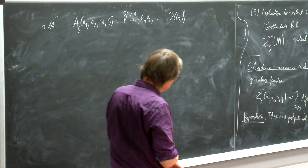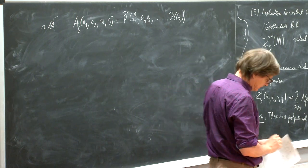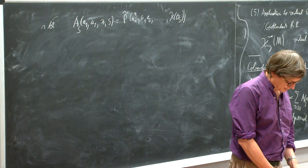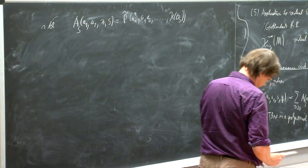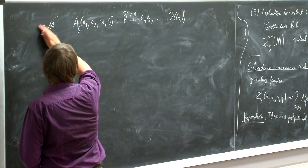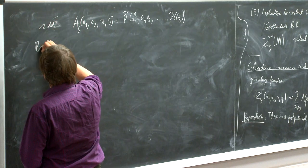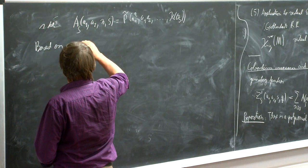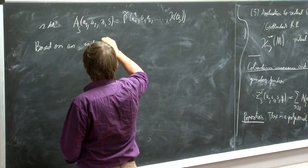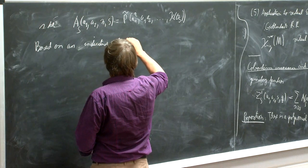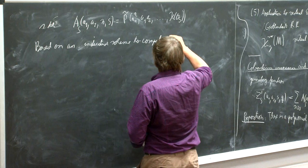The cobordism invariance result is based on some modification of an old argument with Ellingsrud and Lehn, based on an inductive scheme to compute integrals on Hilbert schemes of points.